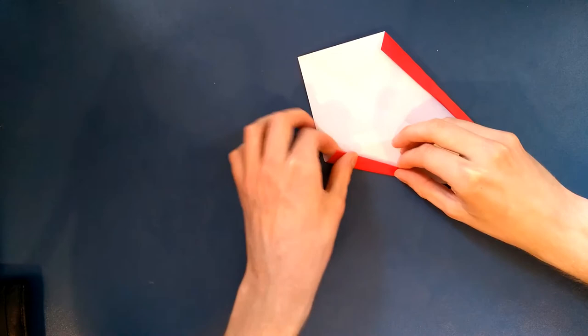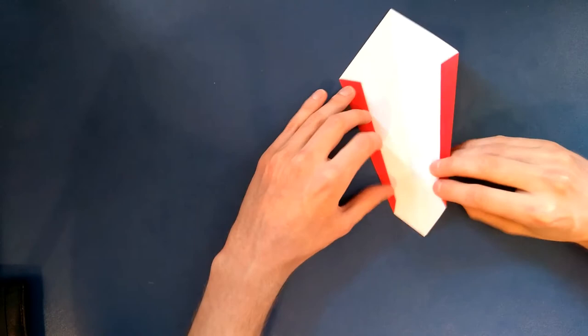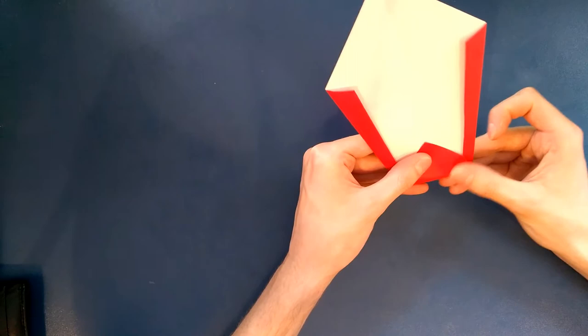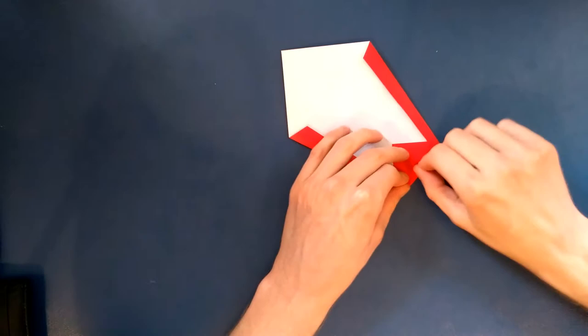The next thing we want to do is take the bottom point and just fold it up. Again, you can choose exactly how much you want to fold it up by, so whatever looks right to you. You can also choose to make these edges thicker or thinner as you choose.